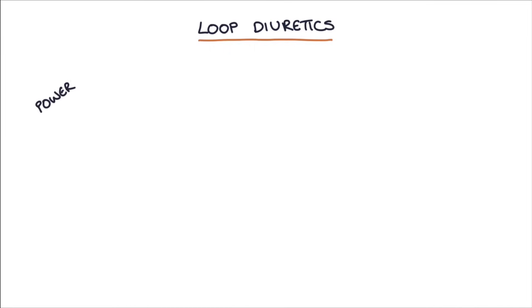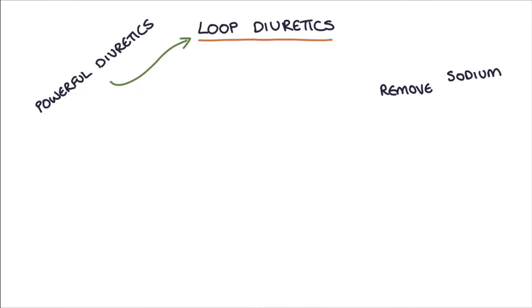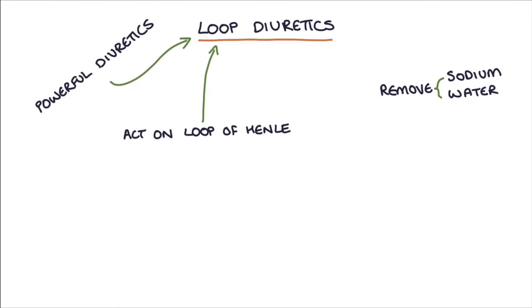Loop diuretics are powerful diuretics that are used to stimulate the kidneys to remove sodium and water from the body, and they do this by acting on the loop of Henle in the nephron of the kidneys, which is why they're called loop diuretics.